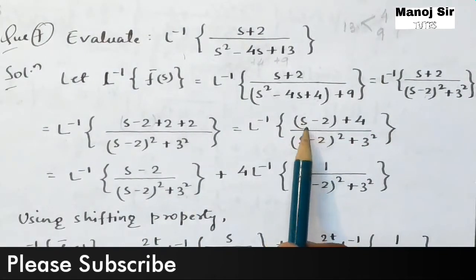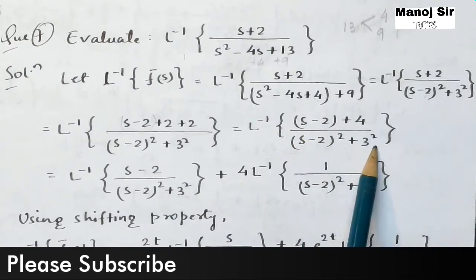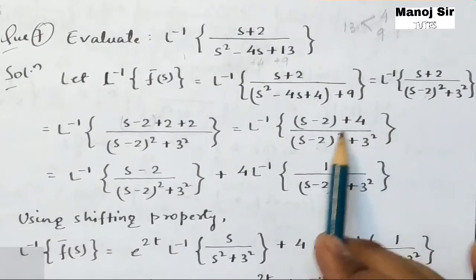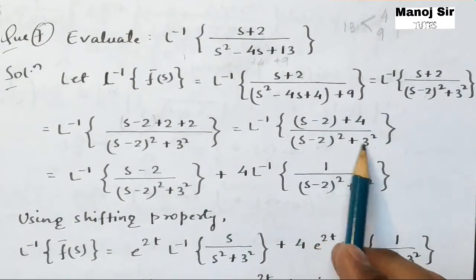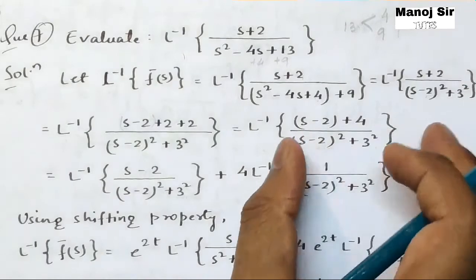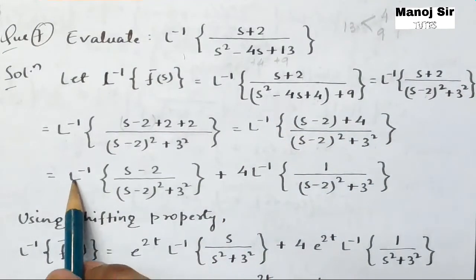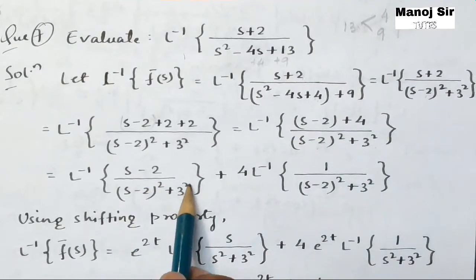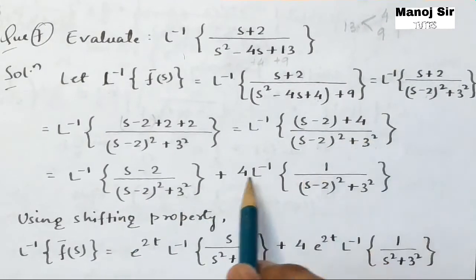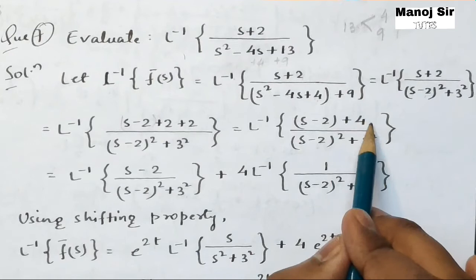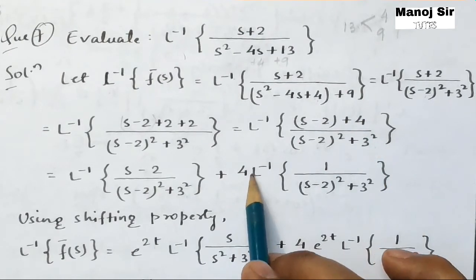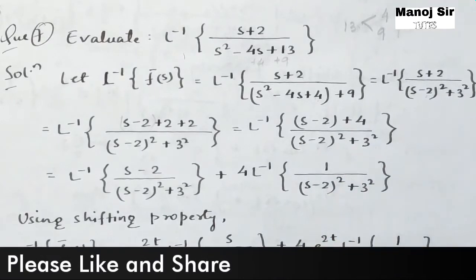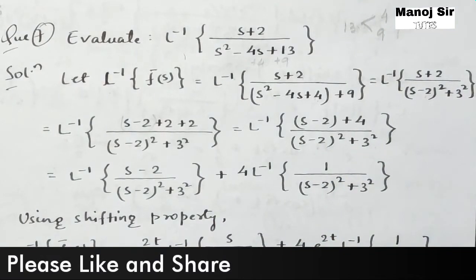Now we separate this into two terms: the first is the inverse Laplace transform of (s − 2) upon [(s − 2)² + 3²], and the second is 4 upon [(s − 2)² + 3²]. Since 4 is a constant value, we take it outside: inverse Laplace transform of (s − 2) upon [(s − 2)² + 3²] plus 4 times inverse Laplace transform of 1 upon [(s − 2)² + 3²].